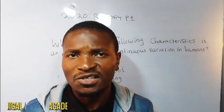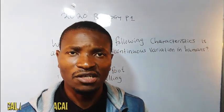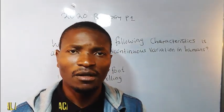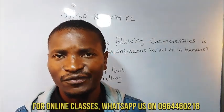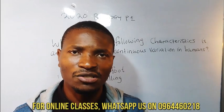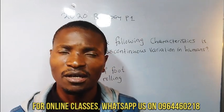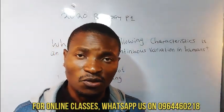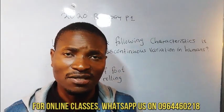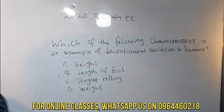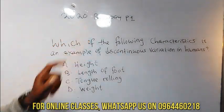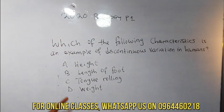In this video I want to share specifically on genetics, and that is on variation. Some of us understand that there are two types of variation: continuous variation and discontinuous variation. If you are a biology student, you have to ensure you understand the differences between the two, and in general what variation is. So let us look at the question.